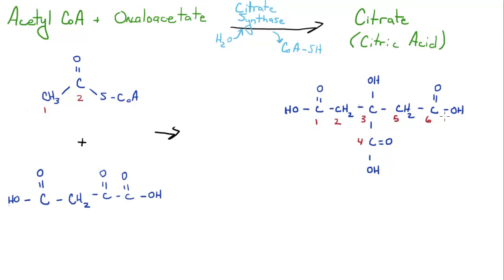And the reason this is called the TCA cycle, means tricarboxylic acid cycle, is because citrate has three carboxylic acid groups. You've got one right here, one right there, and then one right there.